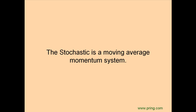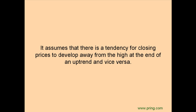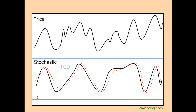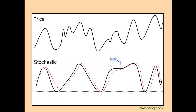The Stochastic Indicator was developed by George Lane several decades ago. It's essentially a moving average momentum system, and it works on the assumption that as prices reach the end of an uptrend, there's a tendency for the closing price to develop further away from the session high, and vice versa during a downtrend. The indicator is plotted within the boundaries of 0 on the downside and 100 on the upside. The formula guarantees that the indicator will never exceed these levels. For the Stochastic, the overbought and oversold readings are always placed at 80 and 20, respectively.